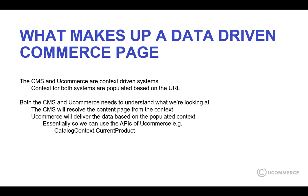Both the CMS and Ucommerce need to understand what the customer is looking at right now. The CMS will then resolve, based on the context, the content page that should be delivered to the customer. And Ucommerce will then deliver the data based on the populated context, which we have used the Ucommerce API for in the Masterclass — for example, a catalog context, the current product, current category, and so on.